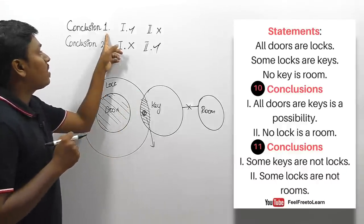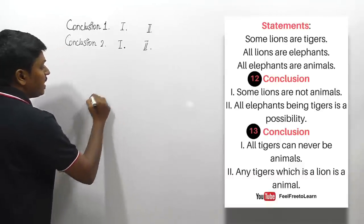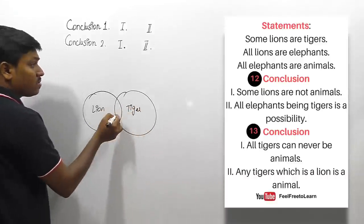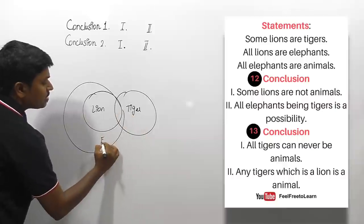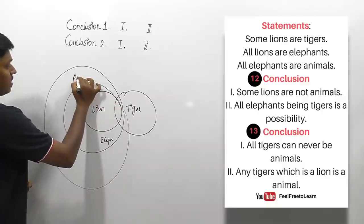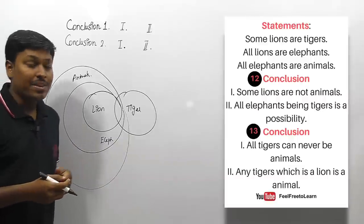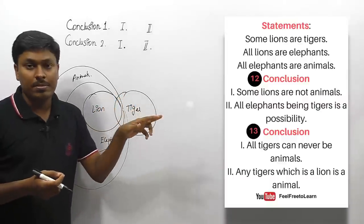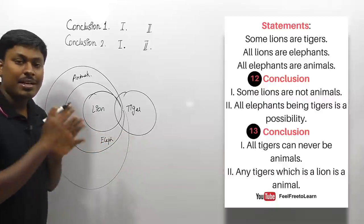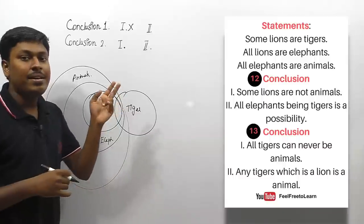So for this question, the first set: conclusion one follows; the second set: conclusion two follows. Next question. Statements: 'some lions are tigers,' 'all lions are elephants,' and 'all elephants are animals.' For the first set, conclusion one: 'some lions are not animals' — tiger, lion, elephant, and animals are all inside a single Venn diagram, so 'some not' does not follow.